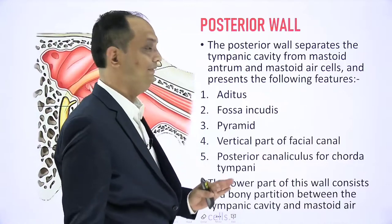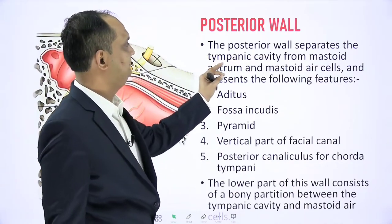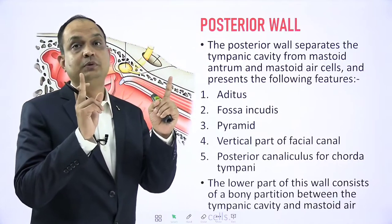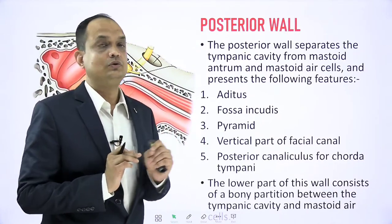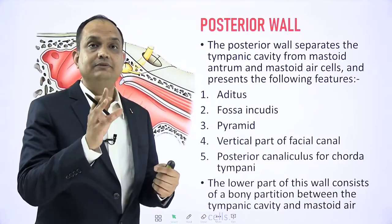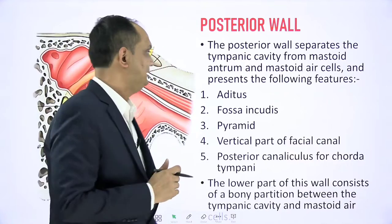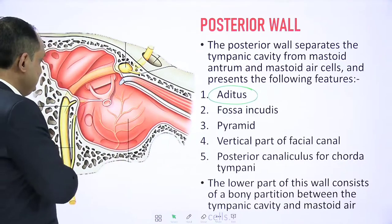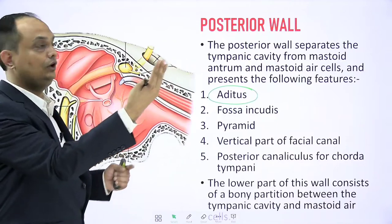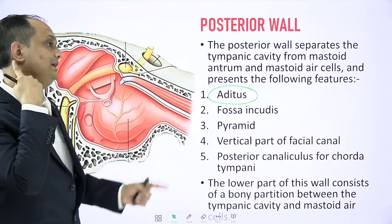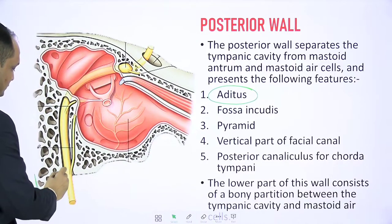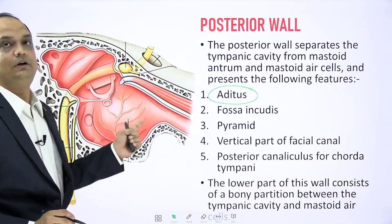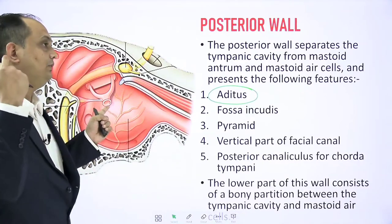The posterior wall separates the tympanic cavity from the mastoid antrum and mastoid air cells. The posterior wall is broader above and narrows below. In the broad upper part there is a very large gap called the aditus — the first feature of the posterior wall. In section, the mastoid process is on the posterior side, and the medial wall is visible. Looking through a sagittal section of the right side of the ear, the posterior wall is behind the middle ear cavity, related mainly with the mastoid process.